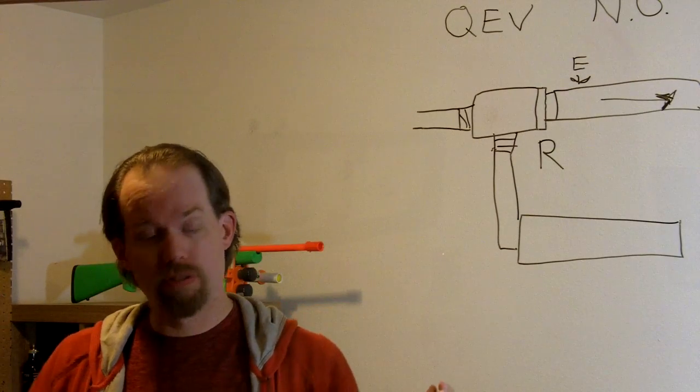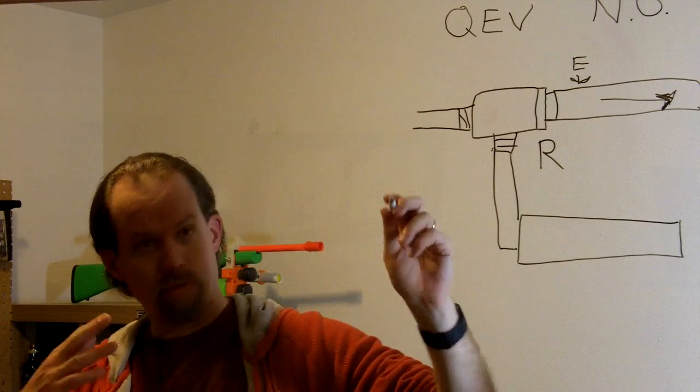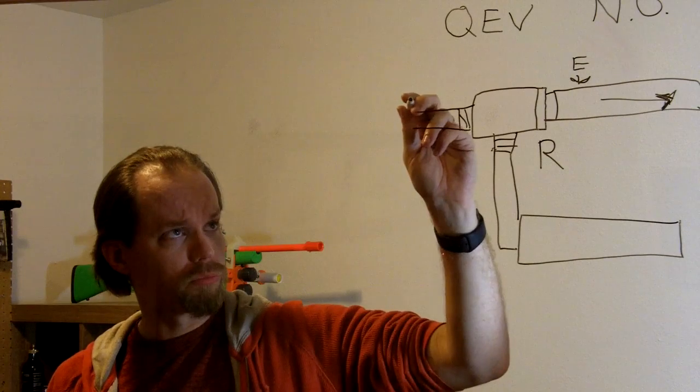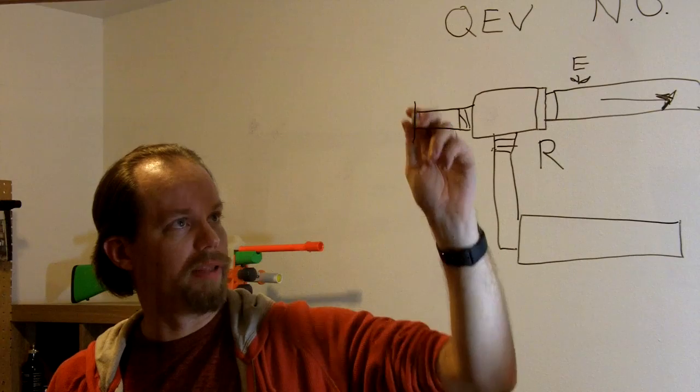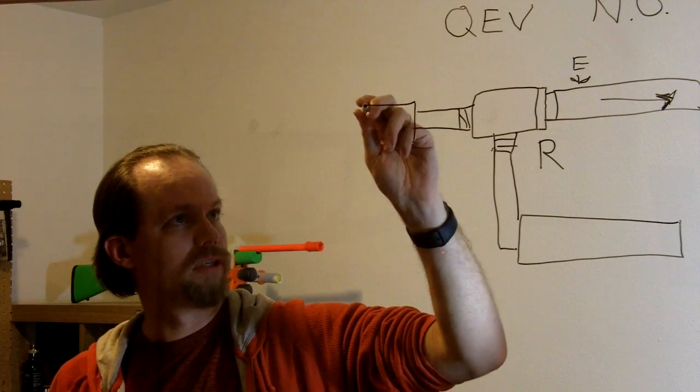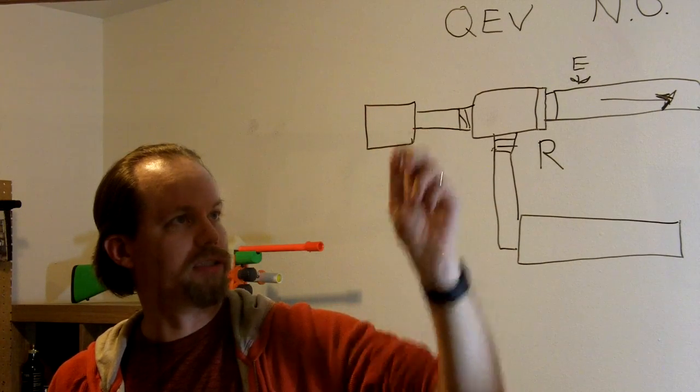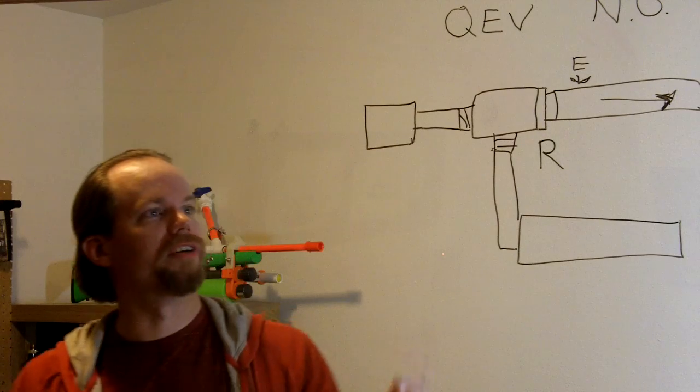But then over here you're going to have whatever your source is. But between the source and the QEV there is a normally open three-way valve, and the way that works, I'll just draw a square because squares are easy with my left hand.